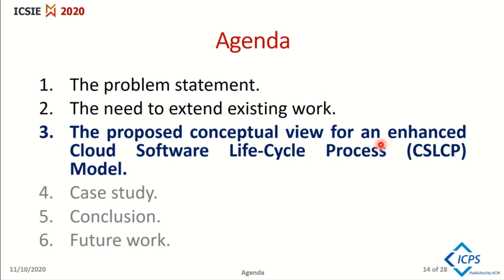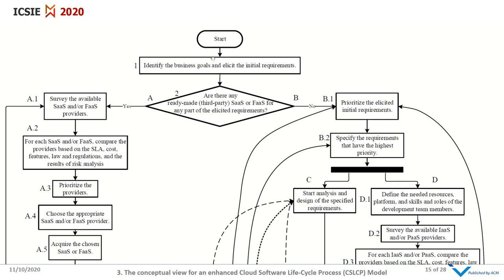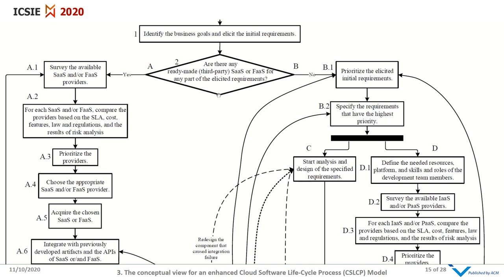Now I'd like to explain the proposed conceptual view for an enhanced cloud software lifecycle process model. The model starts with identifying the business goals and eliciting the initial requirements. Then a question is asked: are there any ready-made Software as a Service or Function as a Service for any listed requirements? The answer goes to two tracks. Track A: there are SaaS or FaaS for the requirements. Track B: there aren't any SaaS or FaaS for the listed requirements.